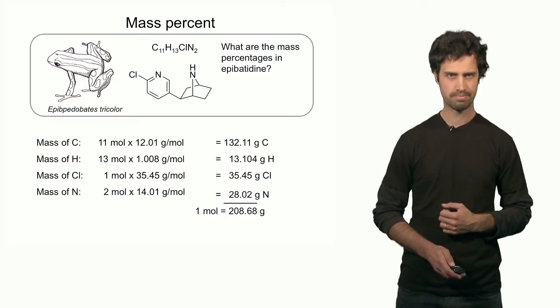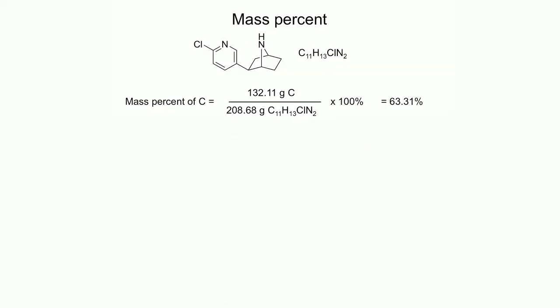Knowing the molar mass of epibatidine (208.68 g/mol) allows us to calculate the mass percentages of each element. Carbon contributed 132 grams to one mole of the compound. Taking 132 divided by 208.68 times 100 gives 63%, so carbon contributes 63% by mass. For hydrogen, approximately 13 grams divided by the molar mass of the compound times 100 gives approximately 6.3%.